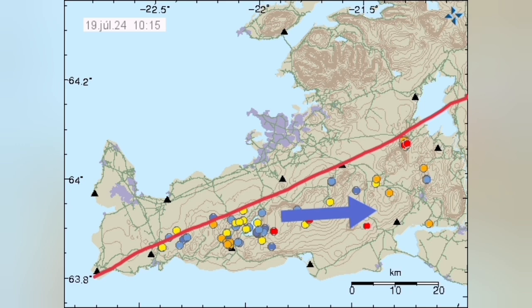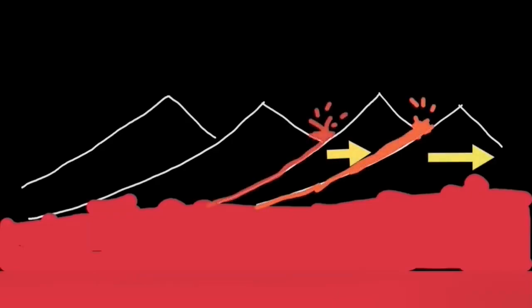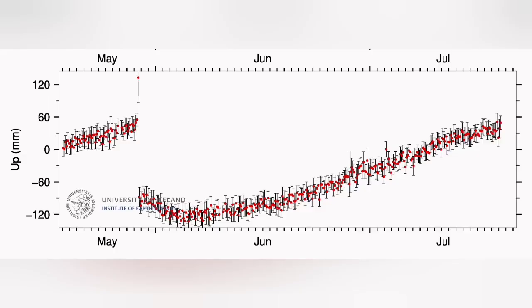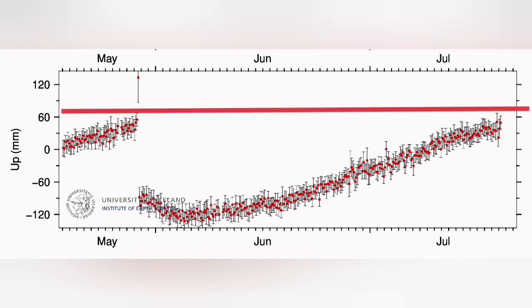As it moves and pulls, it practically rips the ground — the earth's crust — and creates what we call a rift. This rift is the location of these eruptions, and over time as the rift moves from one point to the next, eruptions happen in sequence from the first to the second and the third. These are the volcanic systems in that area.